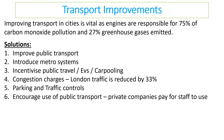Improved transport in cities is vital. 75 percent of carbon monoxide pollution and 27 percent of greenhouse gas emissions are emitted in cities. We can improve this by improving public transport and metro systems, incentivising public travel, using electric vehicles, incentivising carpooling, and implementing congestion charging. For example, in London, traffic has been reduced by 33 percent since congestion charging was introduced. We can also use parking and traffic controls and encourage the use of public transport.